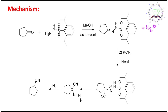In the next step, what is given is potassium cyanide and heat. We know potassium cyanide means K⁺ CN⁻, and CN⁻ is actually a good nucleophile. Simple question: where can the nucleophilic attack be done? There are two centers — number one is this carbonyl, and point number two is this sulfur double bond oxygen.